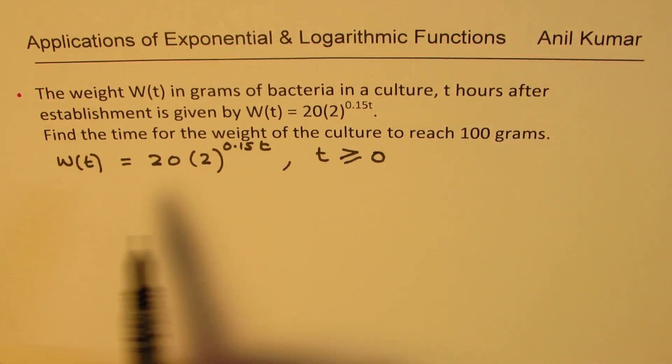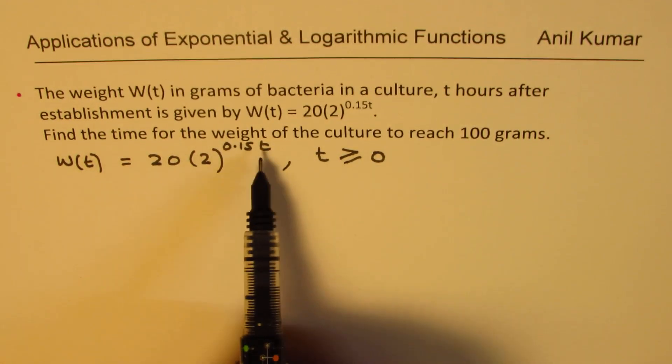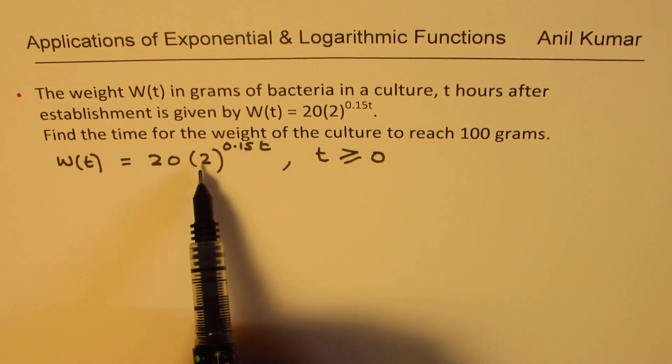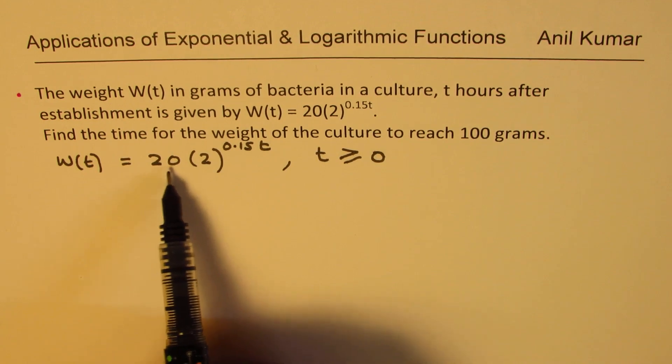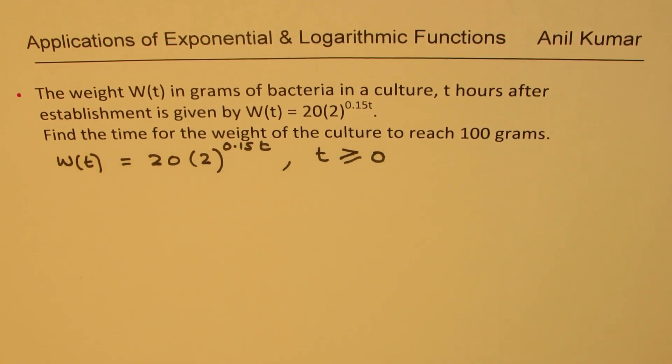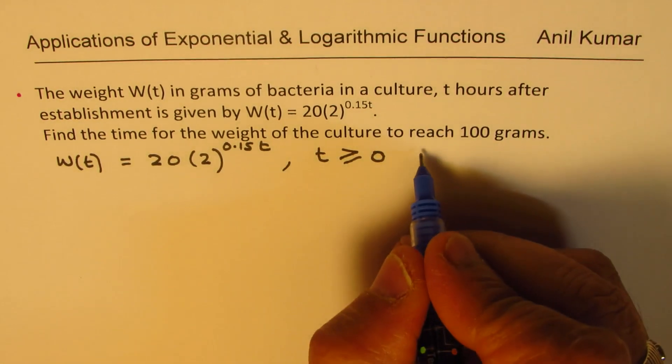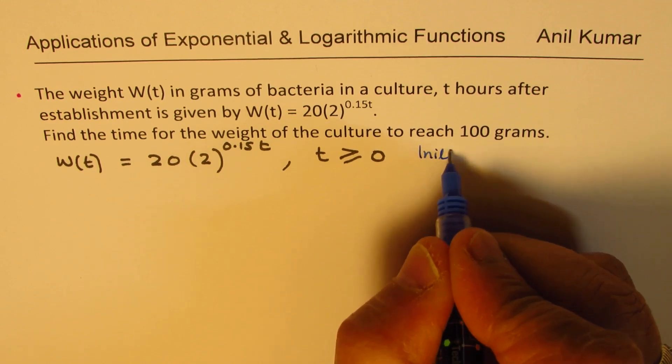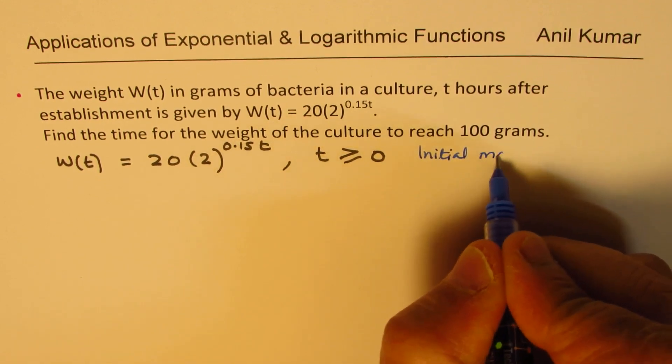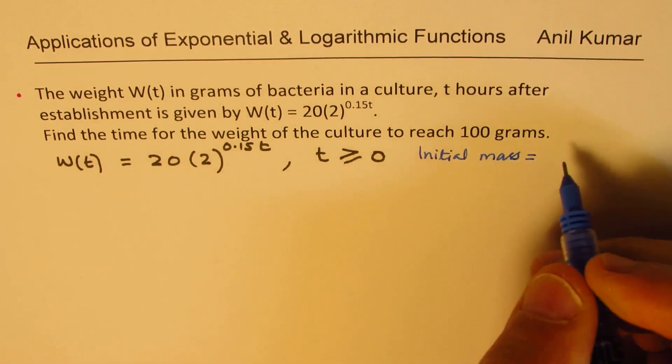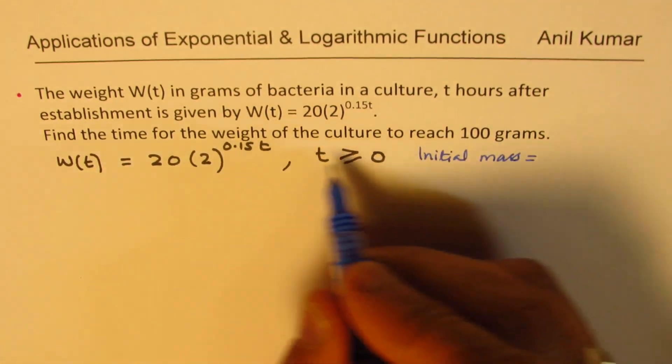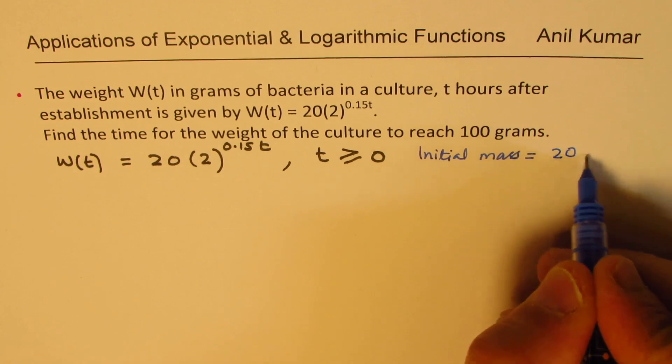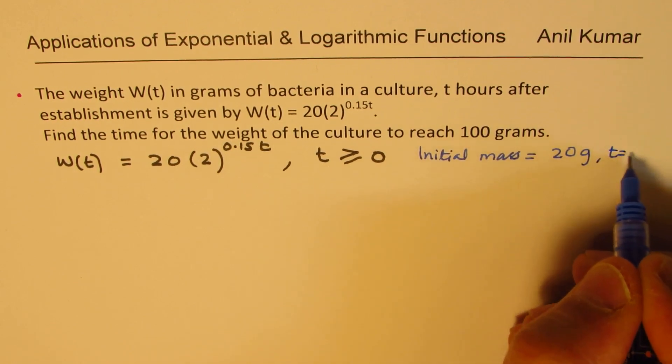To understand this equation better, if t is 0, the exponent will be 0. So 2 to the power of 0 will be 1, and the initial mass is 20 grams. That is what you gather from here: the initial weight plus the Petri dish is 20 grams to start with when t equals 0.